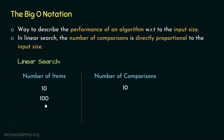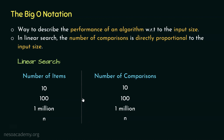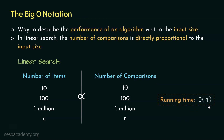Similarly, if we have 100 items, then linear search takes 100 comparisons. If there are 1 million items, then linear search needs 1 million comparisons. Clearly, from this data, we can deduce that if there are N items, then there will be N comparisons. The relation between the number of items and the number of comparisons is directly proportional, and this means the running time of linear search is O(N).